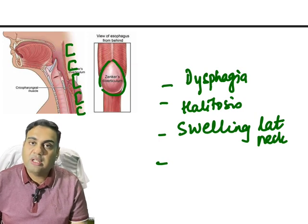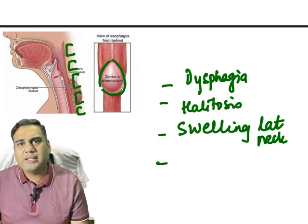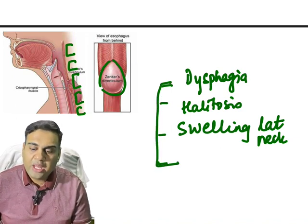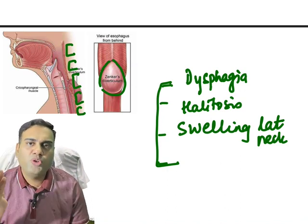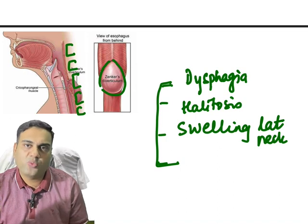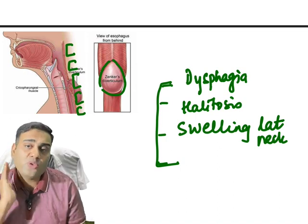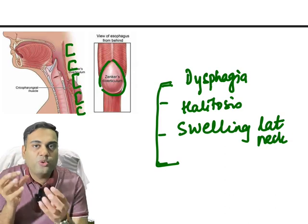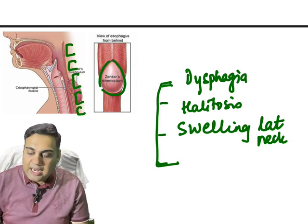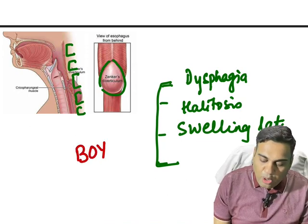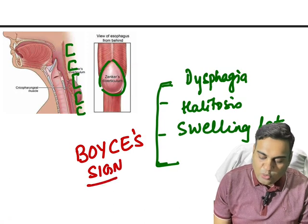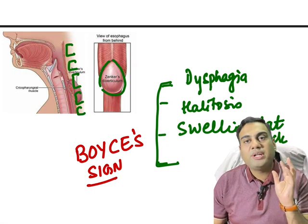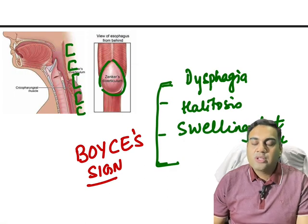The swelling will be in the lateral part of the neck, and very occasionally there is pain. On examination, the neck swelling is going to be a soft cystic kind of swelling. When you press it or auscultate it, you will hear gurgling sounds — this is called Boise sign. Boise sign is the gurgling sound from the lateral neck swelling when you compress it or auscultate.